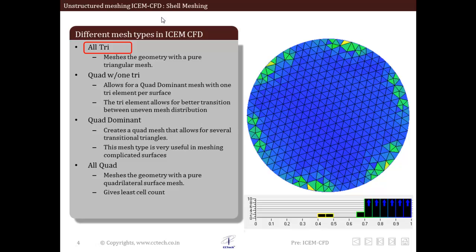First is all tri. In this, the mesh consists of purely triangular elements. As shown in this figure, all the elements are triangular in shape.